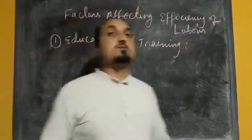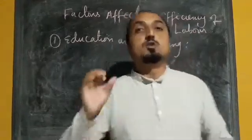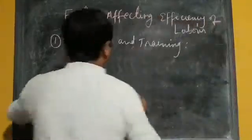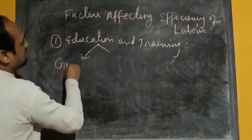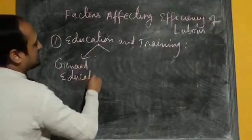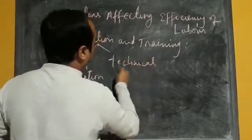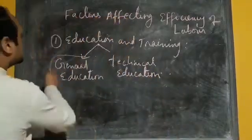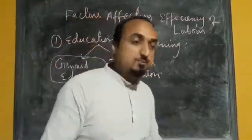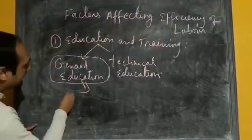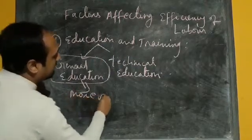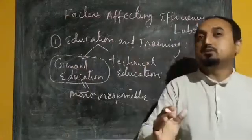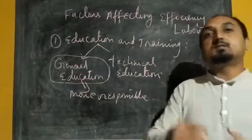Education and training is one of the important factors affecting efficiency of labour. Education is divided into two parts: general education and technical education. General education helps to make a worker more responsible. If the workers are more responsible and more sincere, then obviously the efficiency of workers will improve.